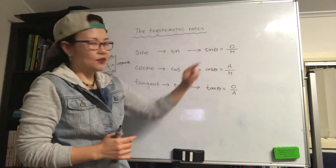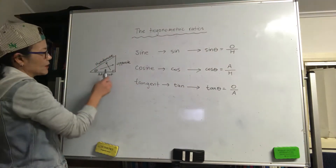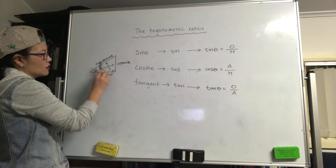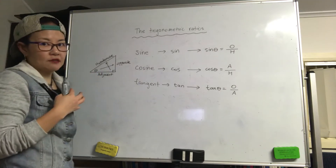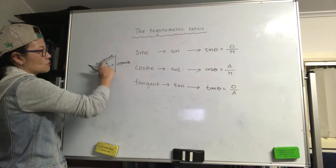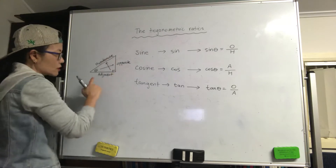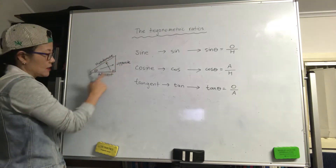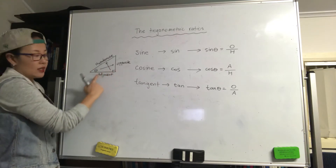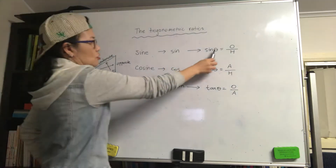So what does sine theta mean? Let's have a look at this right angle triangle. We have theta as the angle and the right angle. You know Pythagoras theorem, so we name all three sides: the opposite to the right angle — the longest side — is the hypotenuse. Opposite to the angle is the opposite side. The side with two angles on it is the adjacent.